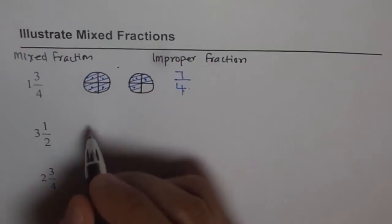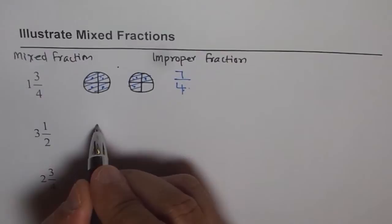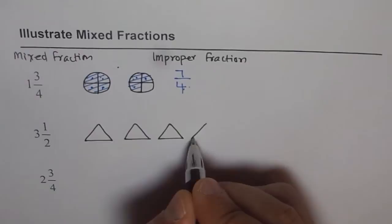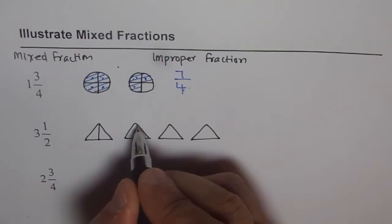Now let's see how to do 3 1/2. 3 1/2 means let's make 3 circles. Let's do with triangles this time. So we'll make 3 triangles. That means 3 whole triangles and 1/2. 3 1/2. Do you see that? So what we will do? Let's divide them into halves.